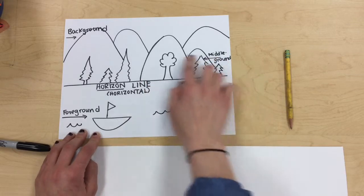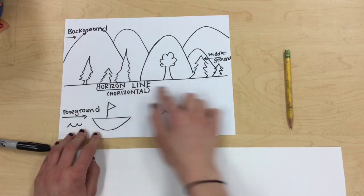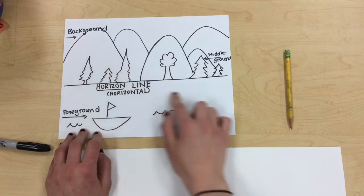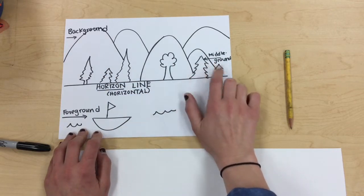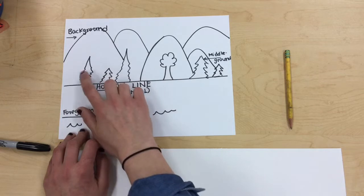Now in your middle ground, that's where your trees are going to be in your landscape today. That's going to be about the middle of your paper and you can say I have middle ground here pointing to my trees, all different types of trees.